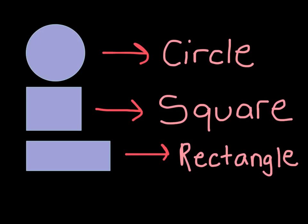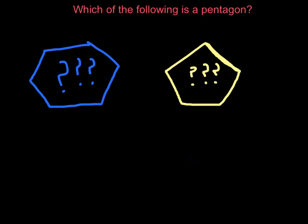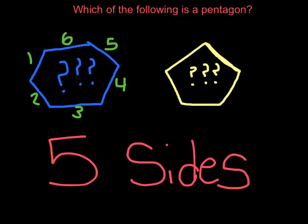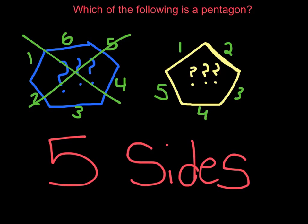I have two more questions on the next slide. Which of the following is a pentagon? A pentagon needs five sides — that's a big clue. Let's test each shape: this one has one, two, three, four, five, six — six sides, so this can't be it. This one has one, two, three, four, five — five sides, so this is our pentagon. That's it for today guys, thanks for watching and have a good day!